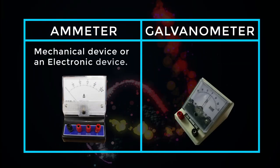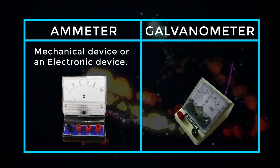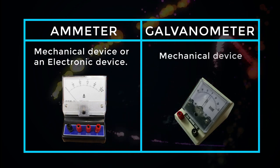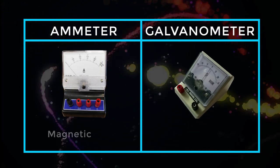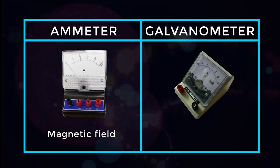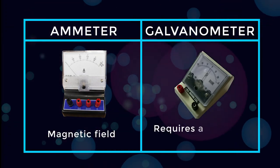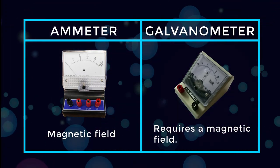An ammeter can either be a mechanical device or an electronic device, whereas a galvanometer is always a mechanical device. An ammeter may or may not have a magnetic field, whereas a galvanometer always requires a magnetic field.